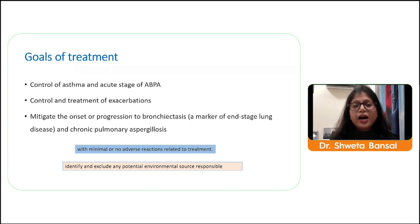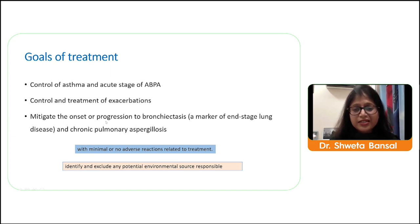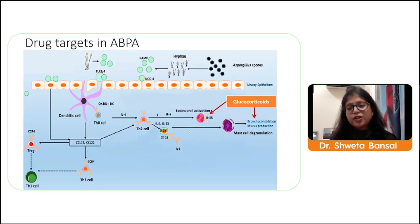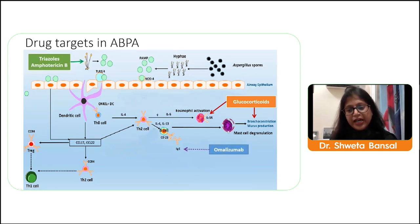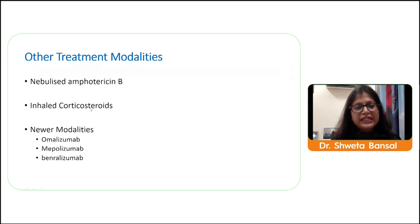Goals of management include control of symptoms, control of the acute stage, control and treatment of exacerbations, and — most importantly — preventing the patient from reaching end-stage (Stage 6: bronchiectasis or chronic pulmonary aspergillosis). Treatment should have minimal adverse effects, and potential environmental sources should be identified and excluded. Available drugs include glucocorticoids, antifungals, and anti-IgE and anti-IL-5 monoclonal antibodies.